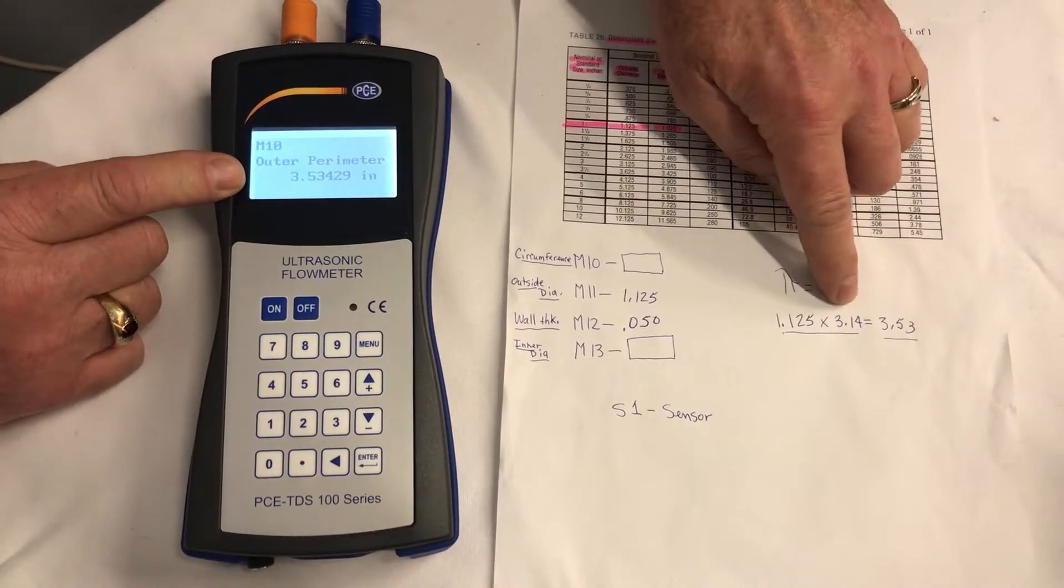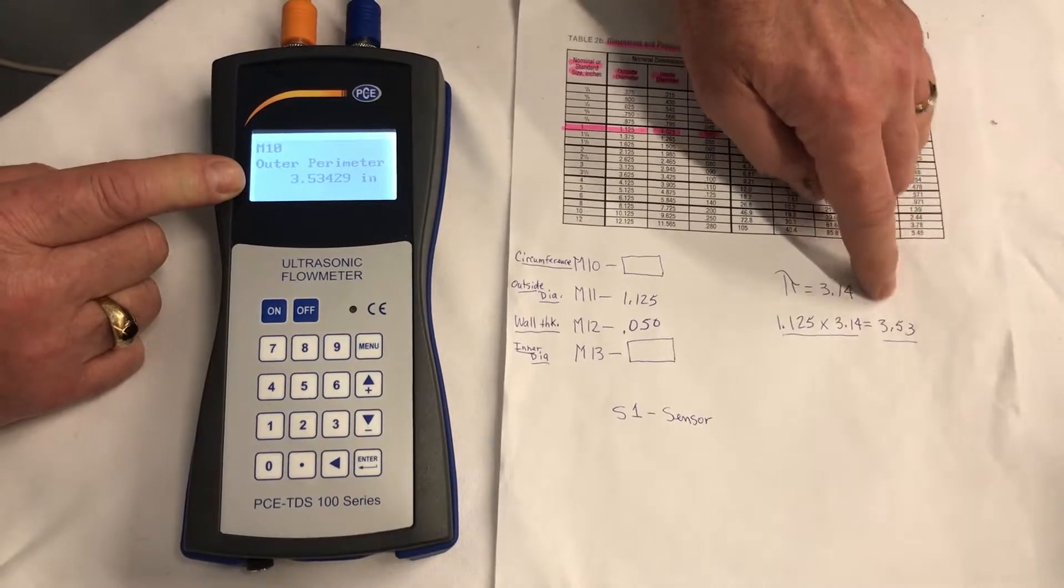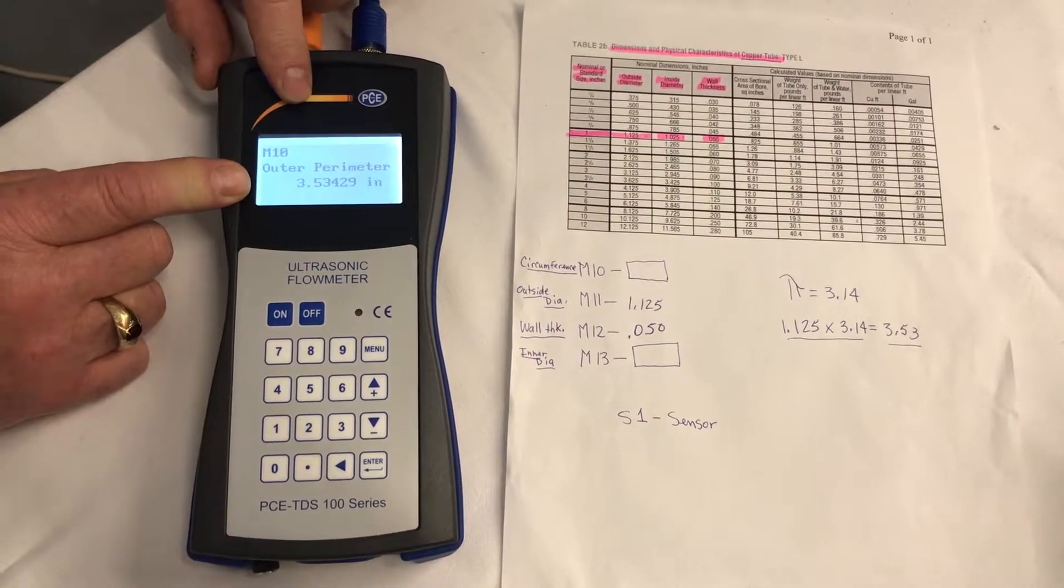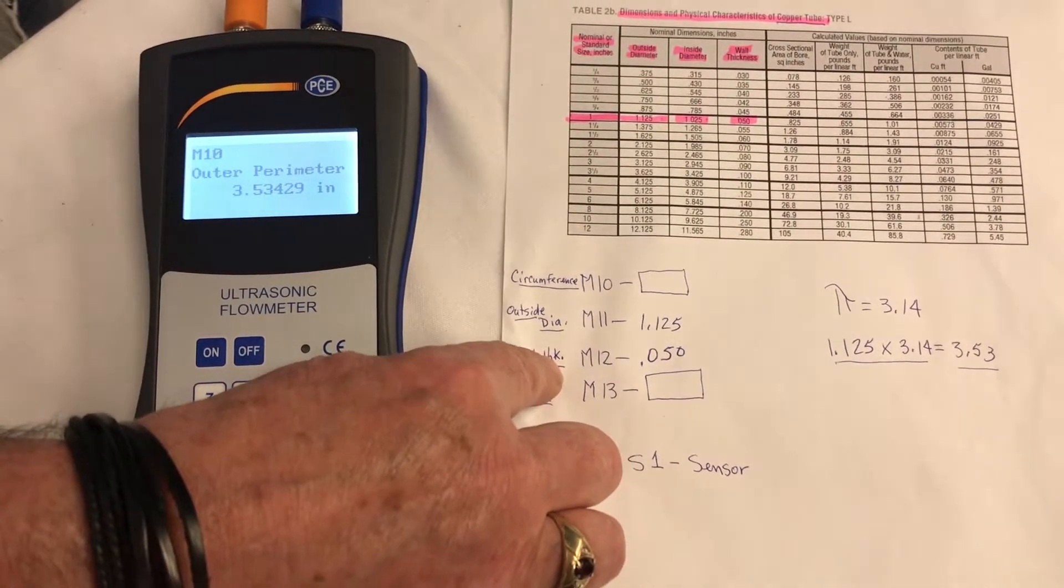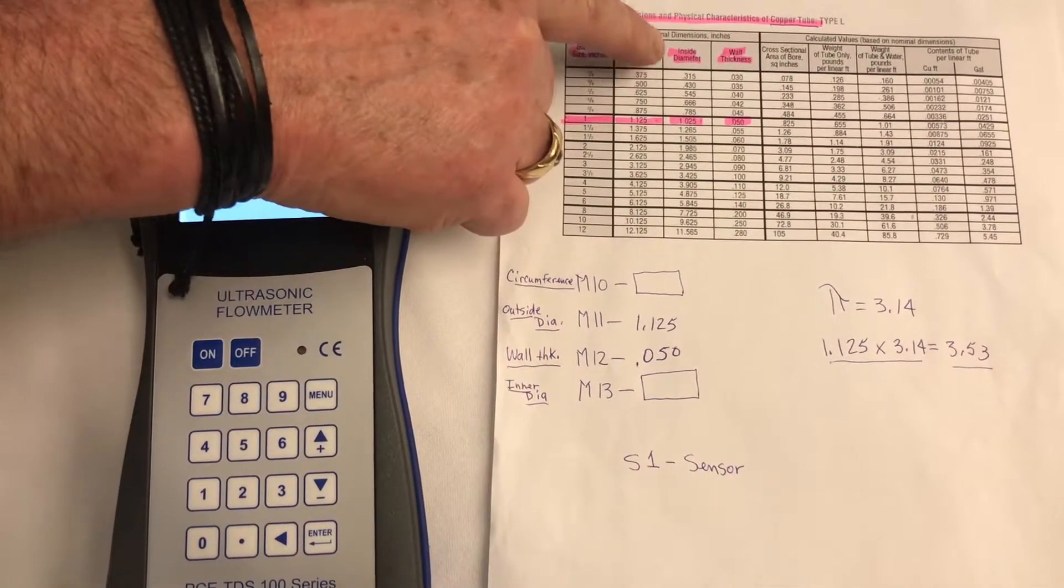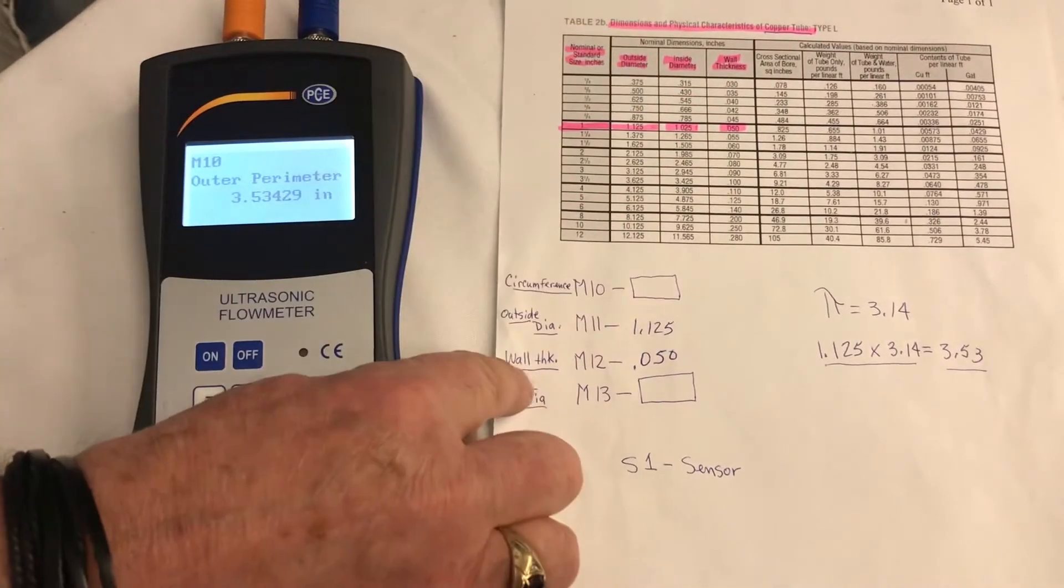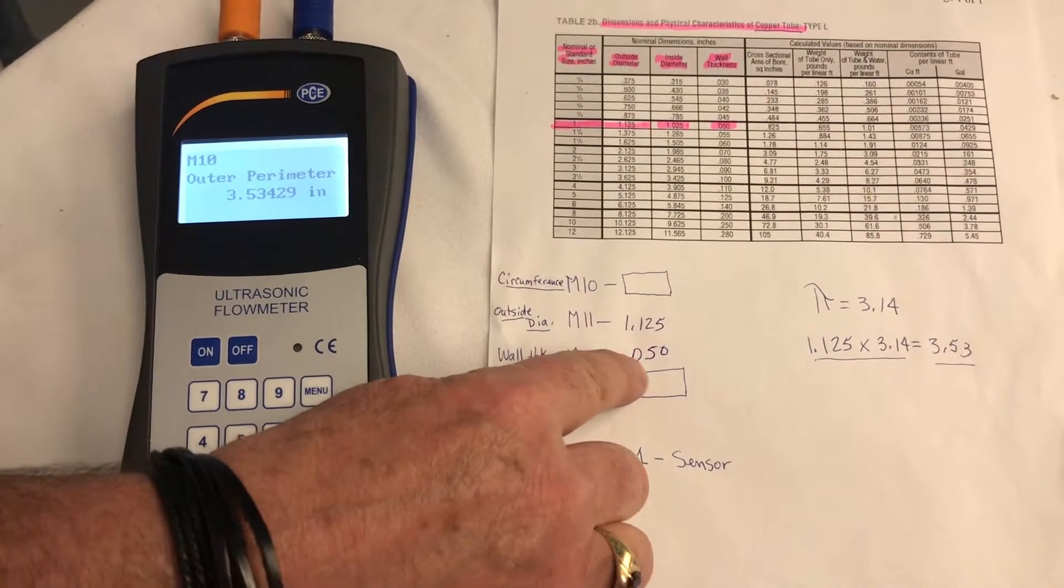1.125 times 3.14, which is pi, equals 3.53. That's what the meter told us. Next, we're going to enter the wall thickness, which is on our chart, which is wall thickness right here, 0.050. That goes under M12, 0.050.